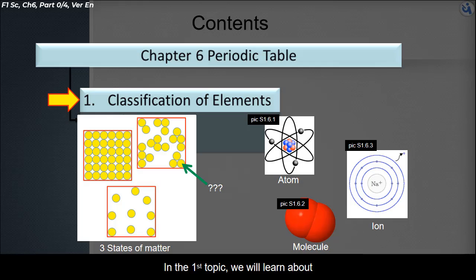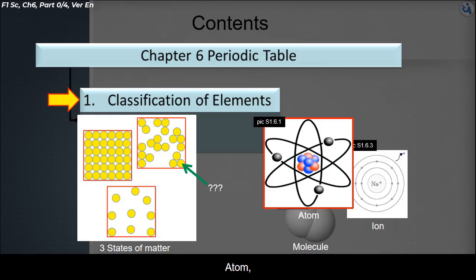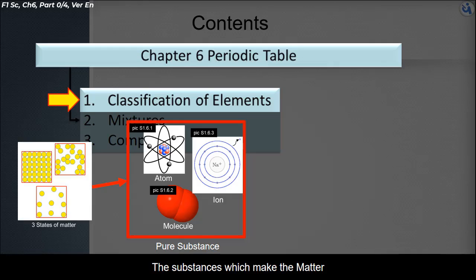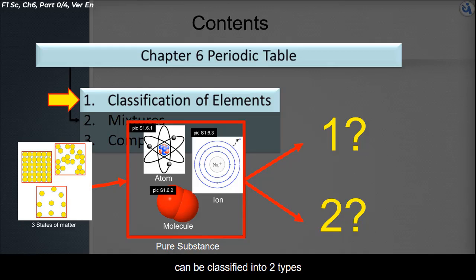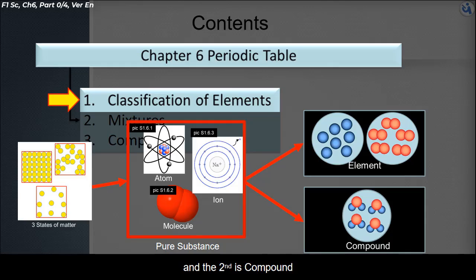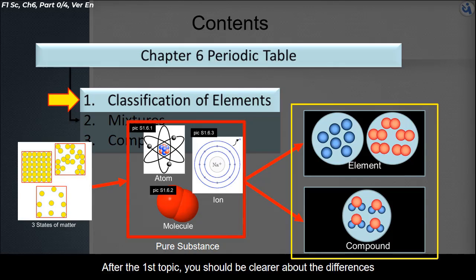The first topic is classification of elements. In the first topic, we will learn about the essential particles that make up matter. There are three types of particles: atom, molecule, and ion. The substances which make matter can be classified into two types: element and compound. After the first topic, you should be clearer about the differences between element and compound.